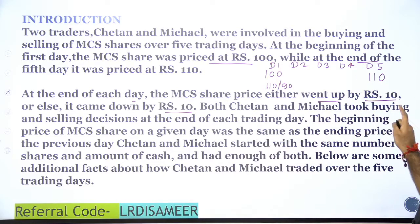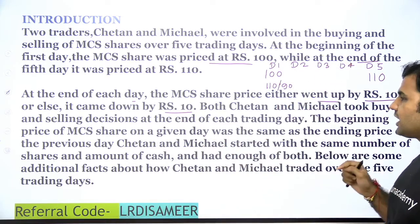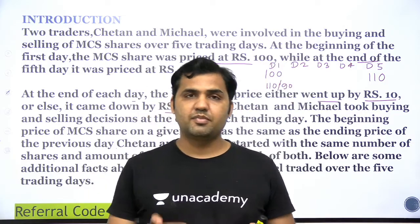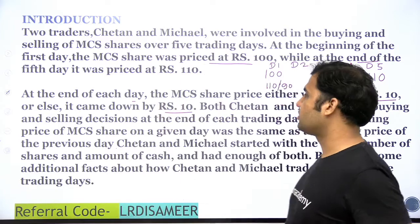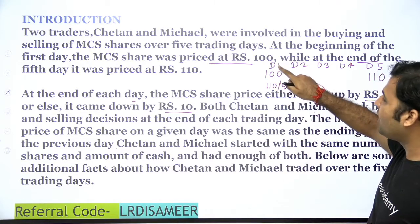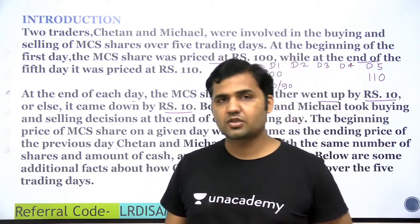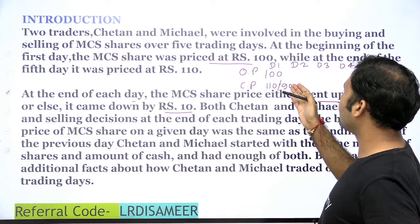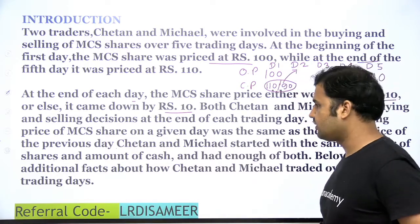Both Chetan and Michael took buying and selling decisions at the end of each trading day. The beginning price of MCS share on a given day was the same as the ending price of the previous day. So the decision of buying and selling is based on the ending price of the day. There are two prices for every day: the opening price and the closing price. The closing price either goes up by 10 or down by 10. Whatever is the closing price on Day 1 becomes the opening price on Day 2.